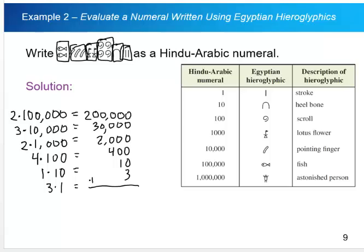In this case, there are none. So our number is two hundred thirty-two thousand four hundred thirteen.